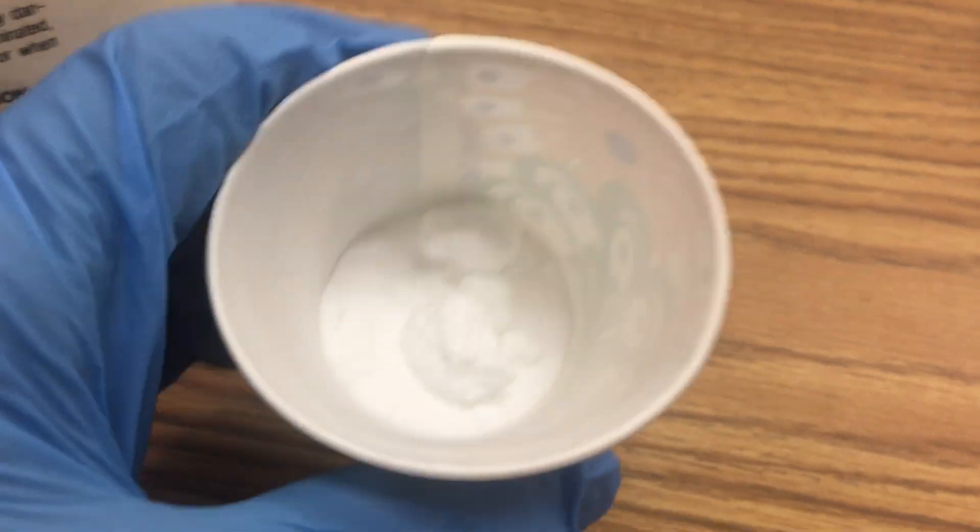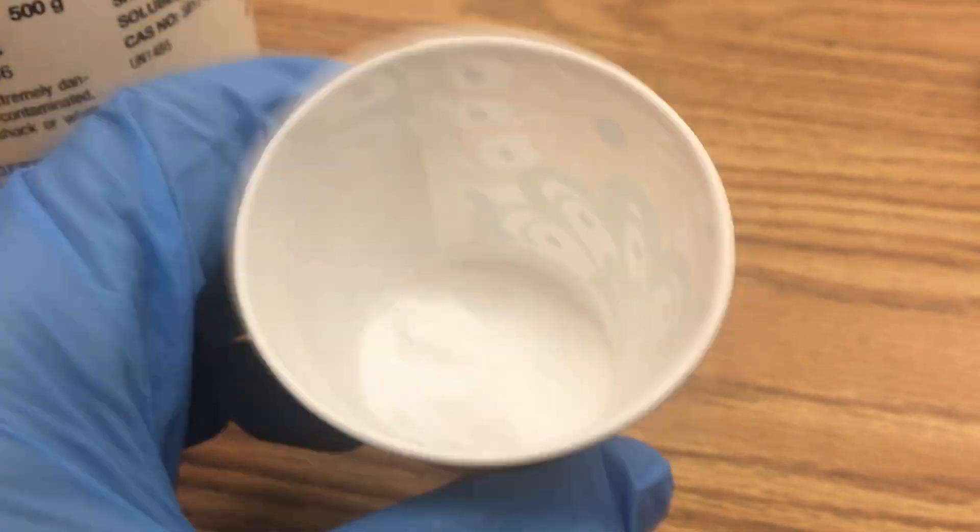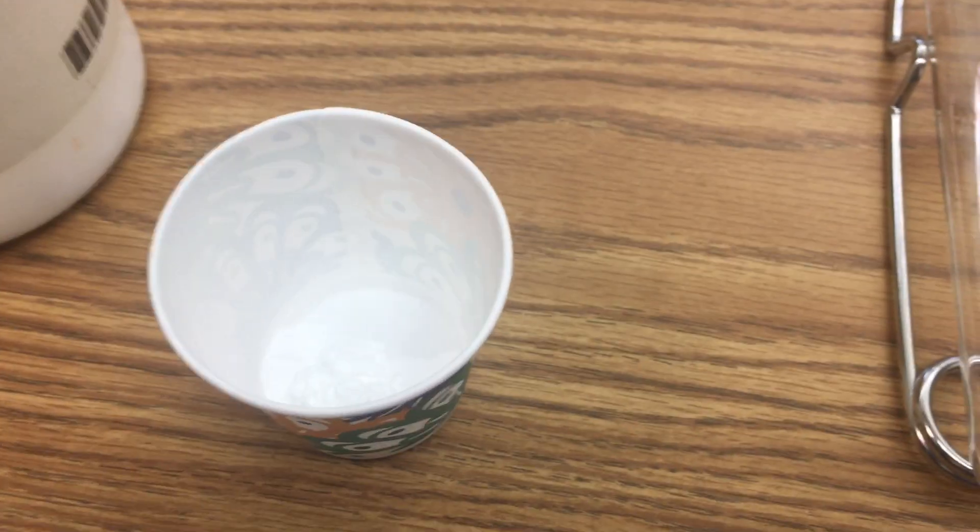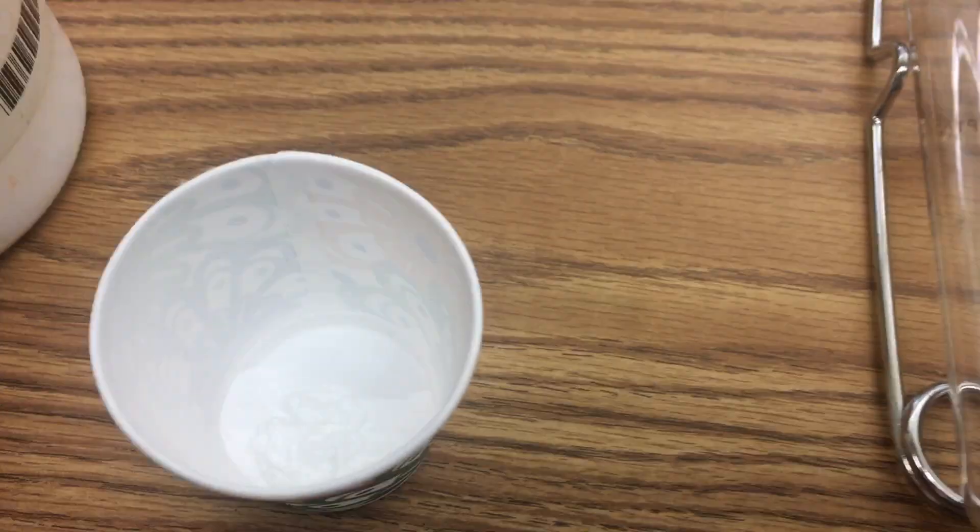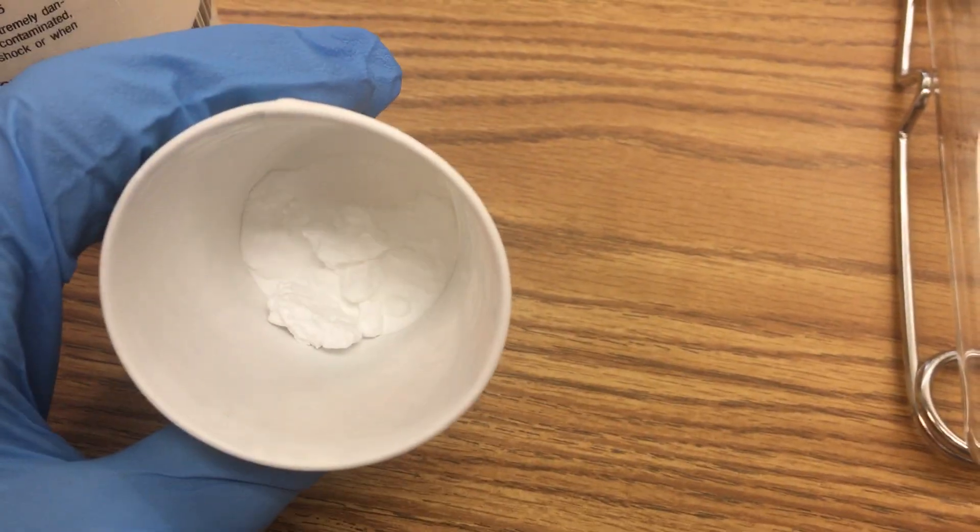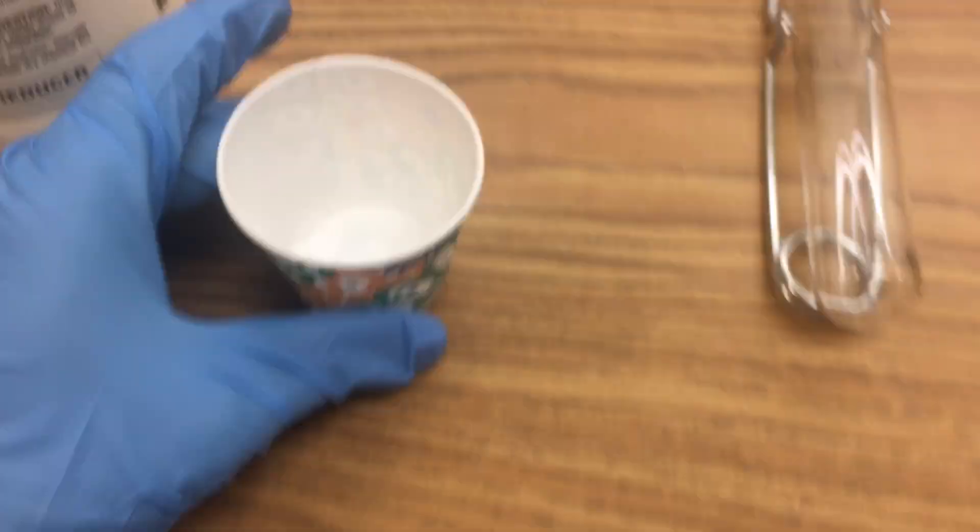I put some in a Dixie cup so you can see what it looks like. It's got some clumps. It's a little bit hard to see because the cup is white as well, but that's our potassium chlorate, and I'm going to put some of it into a test tube.